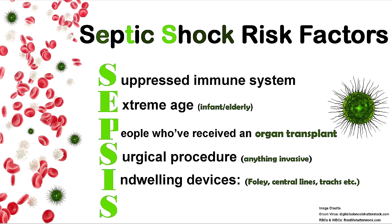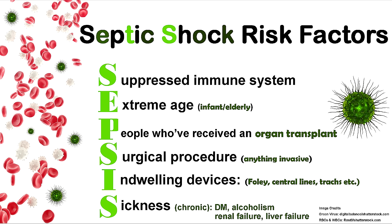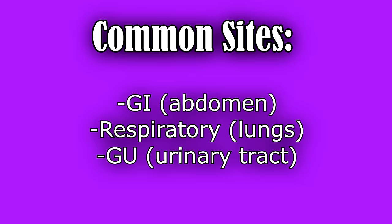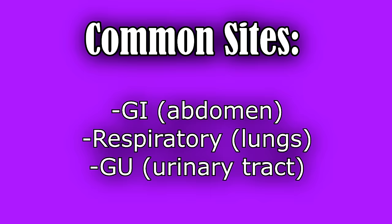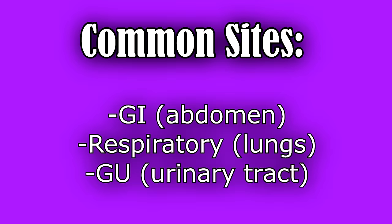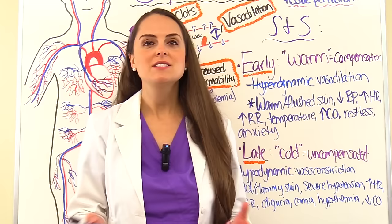I is for indwelling devices — anything inside a patient puts them at risk for a microorganism. If a patient has a Foley catheter, central line, or trach, think: at risk. The last S is for sickness — chronic conditions like diabetes mellitus, hepatitis, alcoholism, and renal insufficiency can all alter a patient's ability to fight infection.